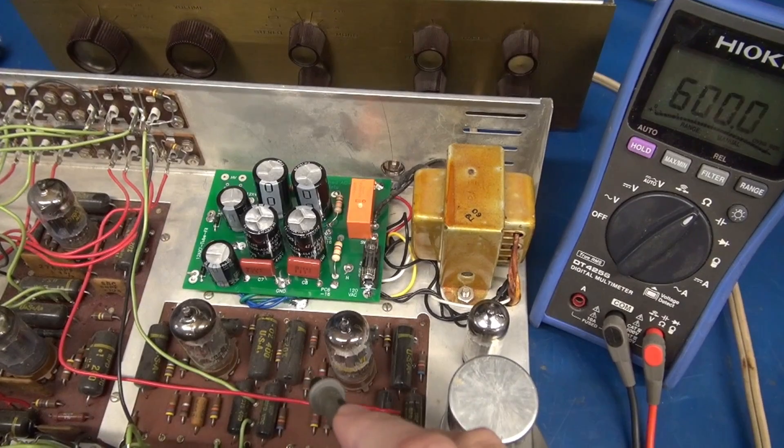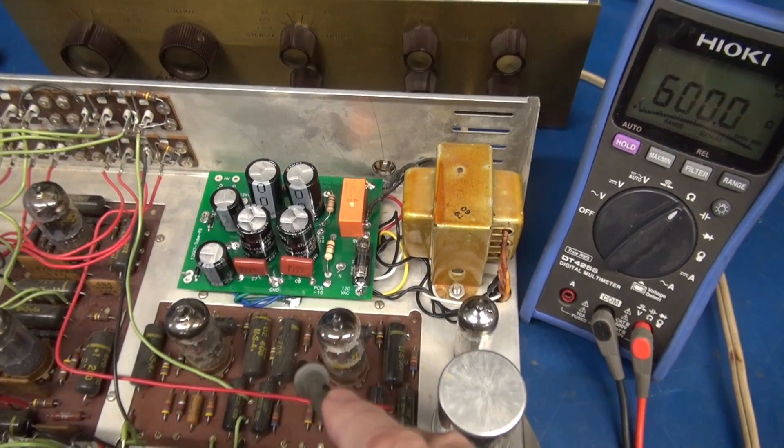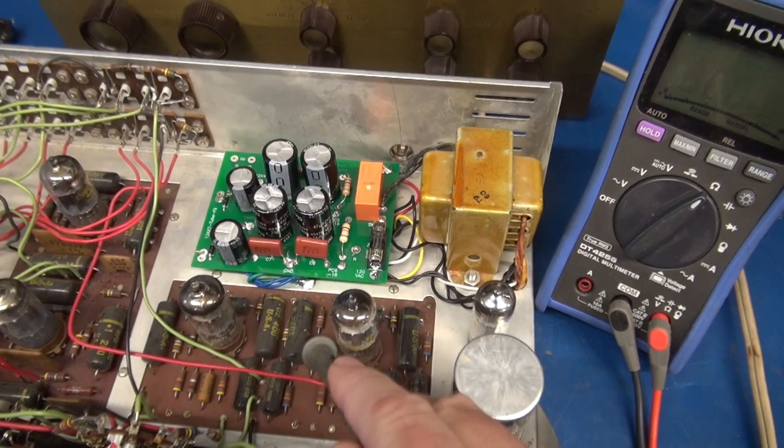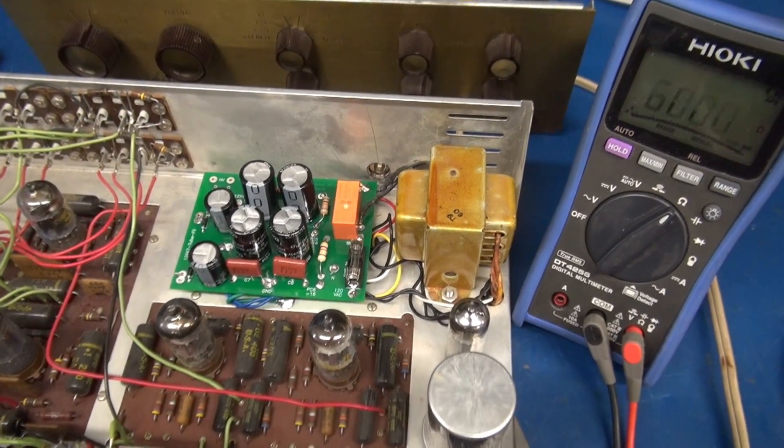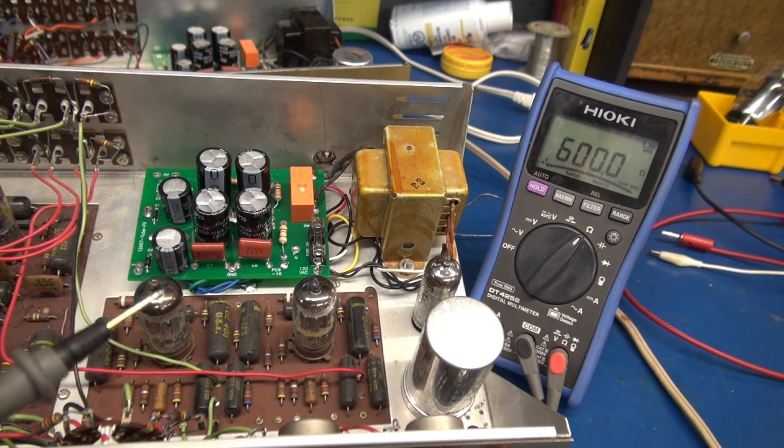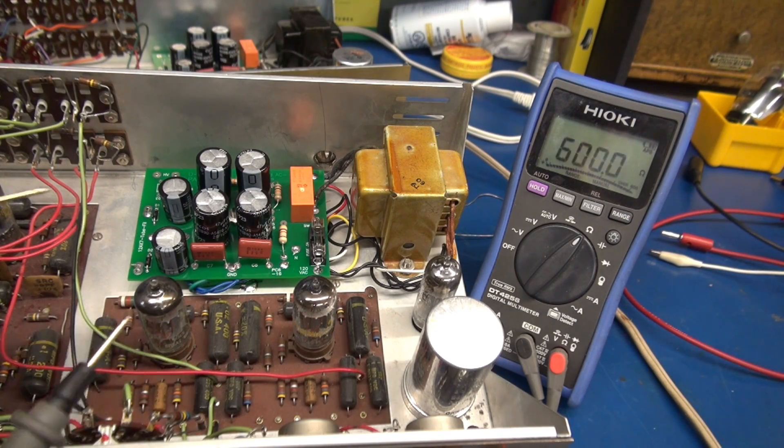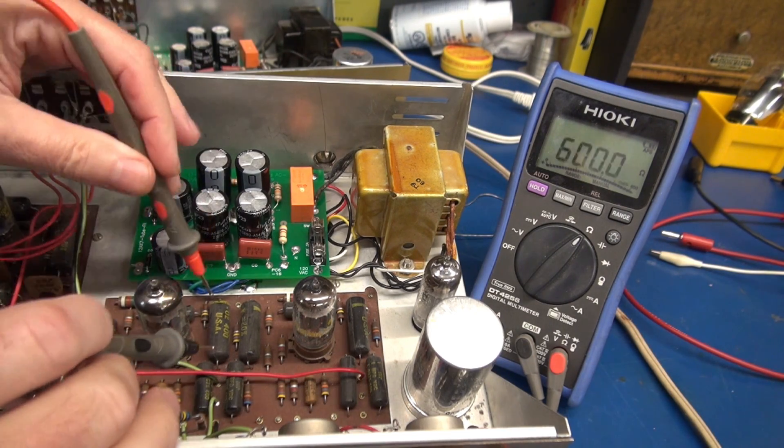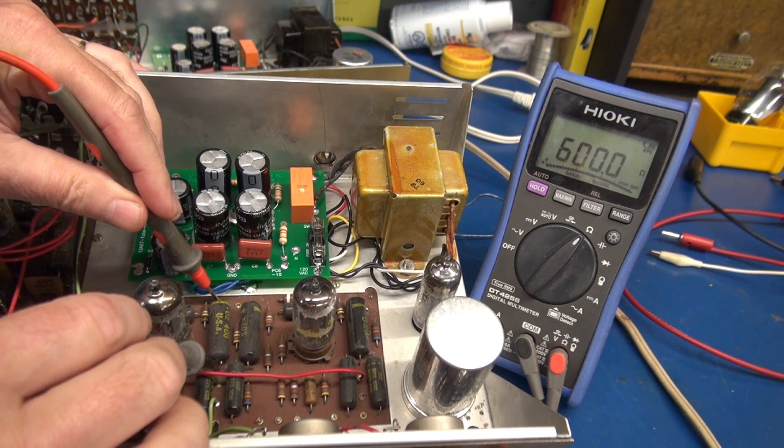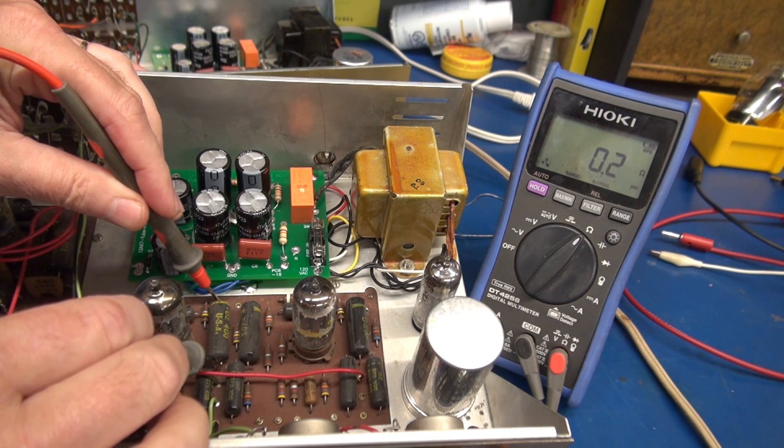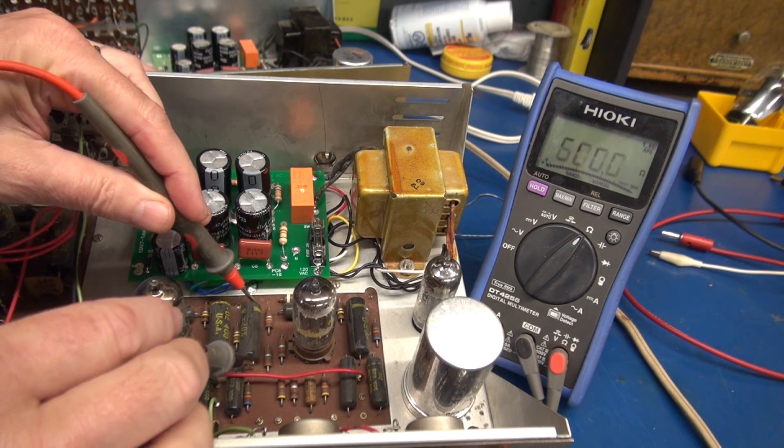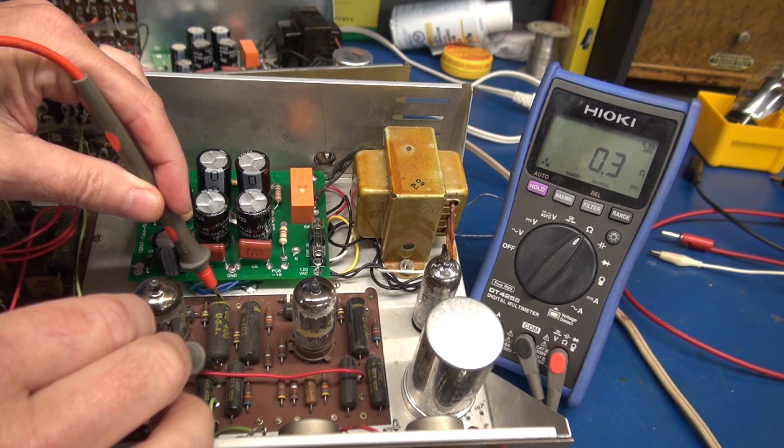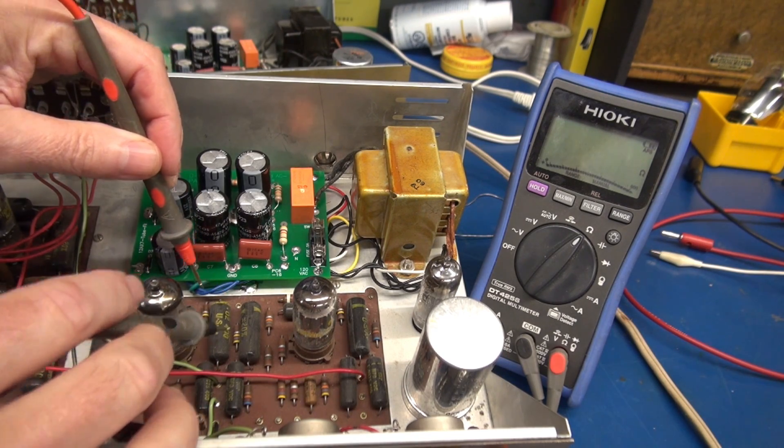So here are the .02 microfarad caps that I just showed you on the schematic that go to those output jacks. So one of these is more than likely shorted. Let's check it with the ohmmeter. So I got the multimeter set at 0 to 600 ohm scale. Short my leads. You'll see it's working. Let's check our caps. So here is one of the .02 microfarads. Look at there. Direct short. Here is the other channel. Not shorted. So we do have a shorted .02 microfarad cap. Let's change that out and see if our DC voltage goes away.